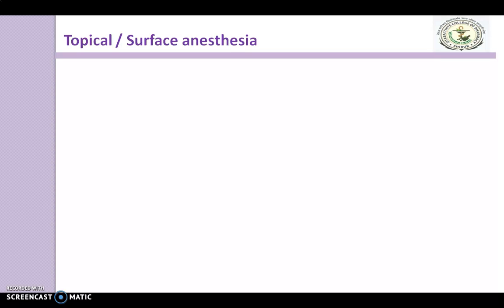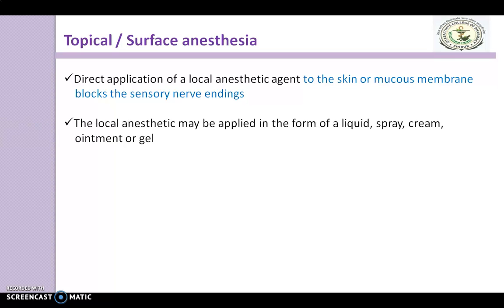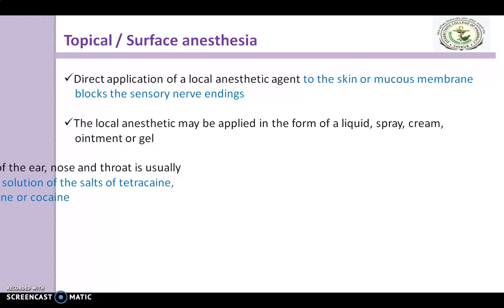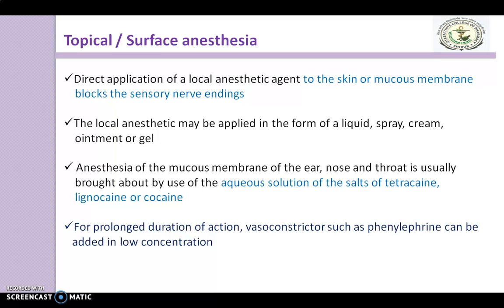First is topical or surface anaesthesia. Direct application of a local anaesthetic agent to the skin or mucous membrane blocks the sensory nerve endings. The local anaesthetic may be applied in the form of liquid, spray, cream, ointment, or gel. Anaesthesia of the mucous membrane of the ear, nose, and throat is usually brought about by use of aqueous solutions of tetracaine, lignocaine, or cocaine. For prolonged duration of action, a vasoconstrictor such as phenylephrine can be added in low concentration.